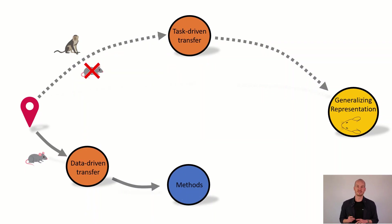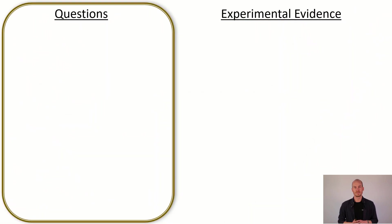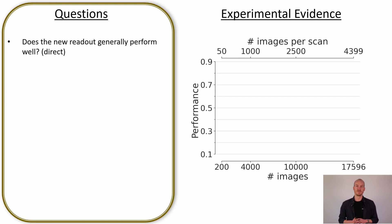Okay, we have these new methods. Let's test them on real experiments. The first question that we want to answer in experiments is how well our readout generally performs. For that we look at the performance as a function of the dataset size again and we compare it to the old previous state-of-the-art factorized readout.